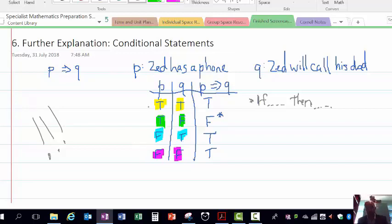The first row: you get an A for specialist maths, I give you a hundred dollars—that's clearly true. Second row: you get an A for specialist maths and I don't give you a hundred dollars—that is abhorrent, that's terrible, it's a lie, so that's false.